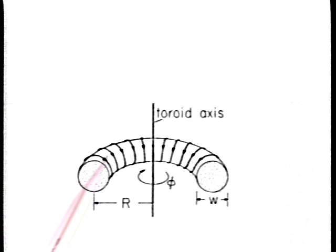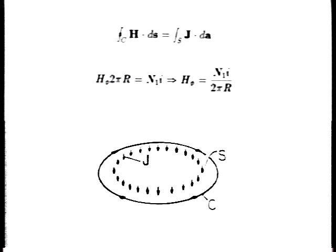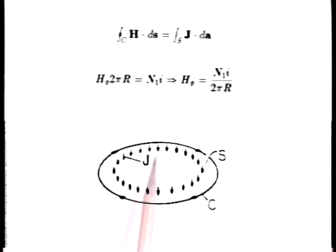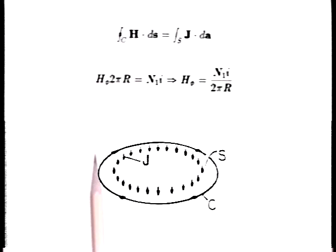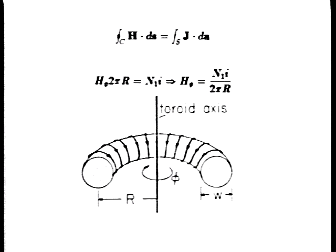A toroidal coil is tightly wound onto a donut-shaped magnetizable core. Each turn carries a current I. For the toroidal geometry, Ampere's integral law is enough to relate the current I to the H field in the magnetizable core material. Symmetry about the toroidal axis suggests that H is phi-directed. Ampere's integral law is written for a contour C circulating about the toroidal axis within the core. Because the major radius R of the torus is large compared to the minor radius, the field is essentially uniform over the cross-section of the torus. We approximate the average radius by the radius R.